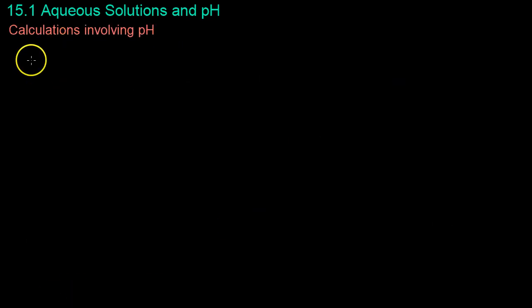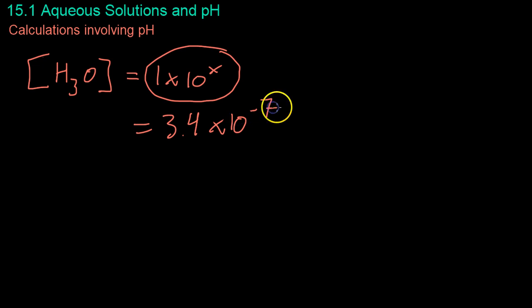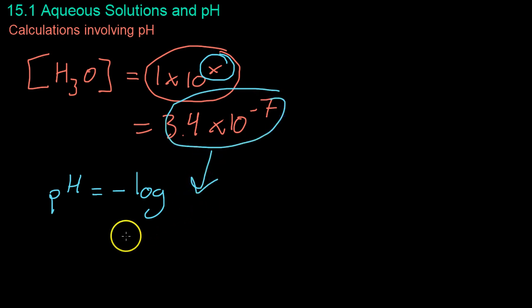So far, we've had pretty easy calculations where the concentration of hydronium has been 1 times 10 to the something. But the problem is that most concentrations are not going to be in this format. More likely, you're going to have some generic number times 10 to negative 7, or whatever. So the vast majority of the time, to calculate the pH, you're going to have to use a calculator. Instead of taking just this number at the top as your pH, you just plug this whole number into the logarithm expression.